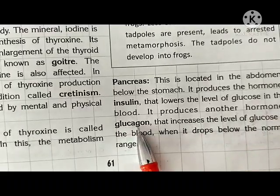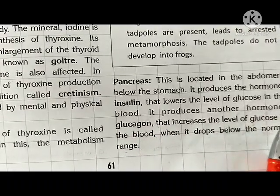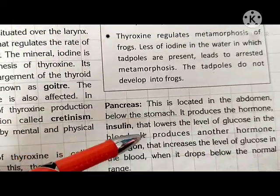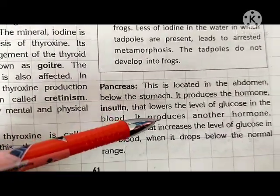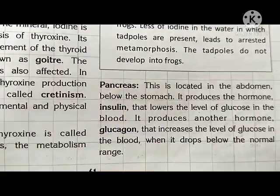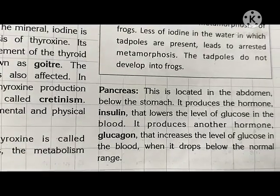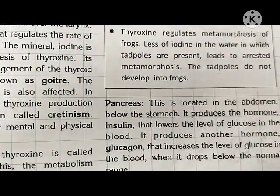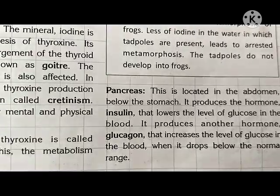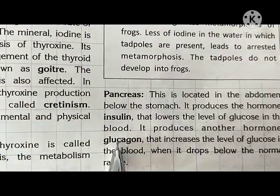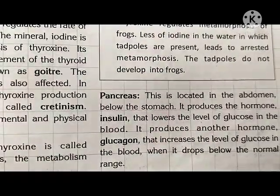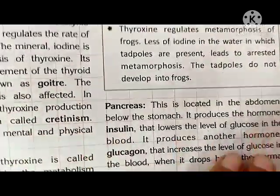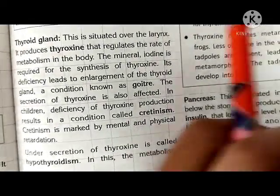The pancreas also produces another hormone, glucagon, which increases the level of glucose in the blood when it drops below the normal range. Insulin lowers the level of glucose so that if you intake more glucose products, your blood does not become too sugary — that is why patients of diabetes need insulin. Glucagon shows an antagonistic property to insulin, meaning it does the opposite: it raises the glucose level. Both insulin and glucagon are secreted by the pancreas.